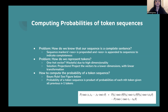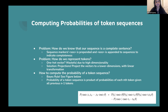First, we'll talk about computing the probability of a token sequence. A token sequence is a complete sequence of tokens with a definitive beginning and end. For example, 'four score and' initially looks incomplete, but if a novice actor went on stage, said 'four score and,' got nervous, and went home, that would be a complete token sequence. We distinguish complete sequences using start-of-sequence and end-of-sequence markers.